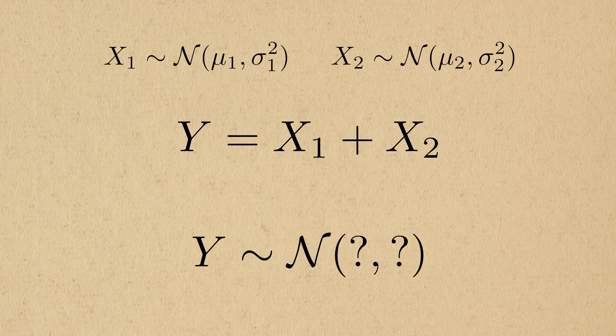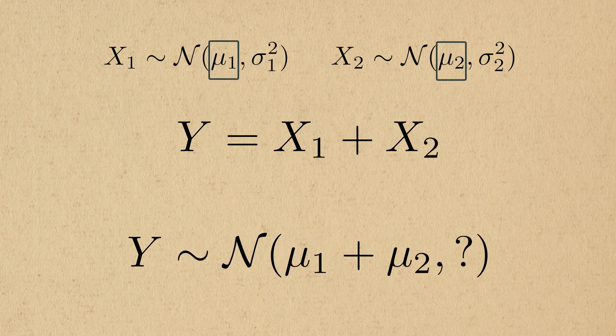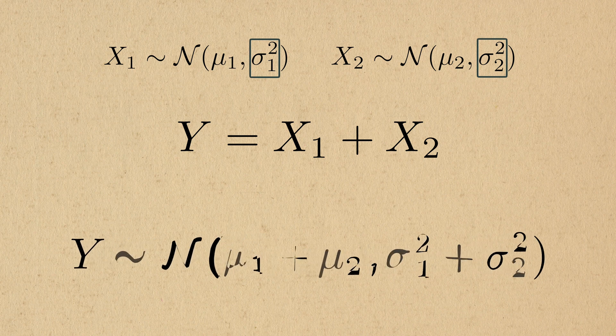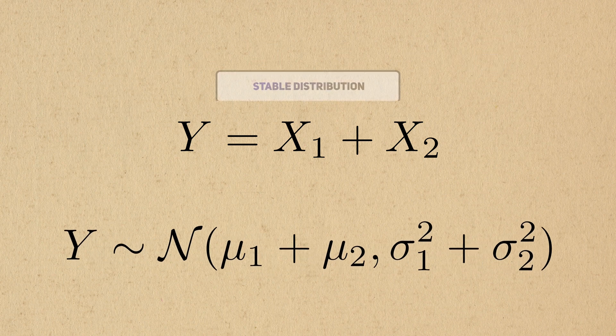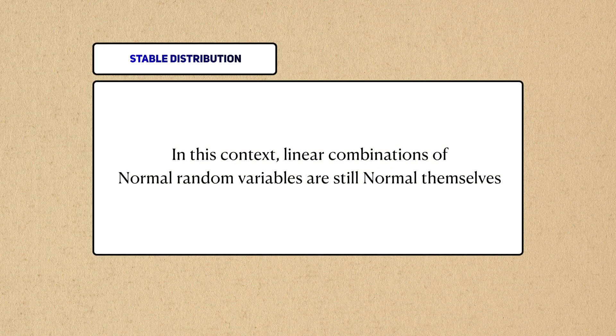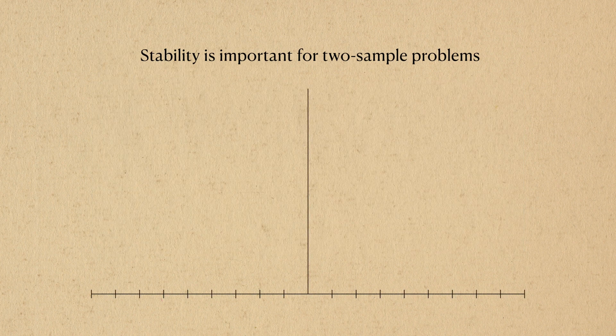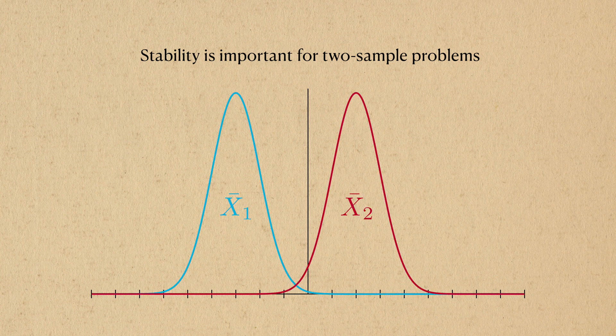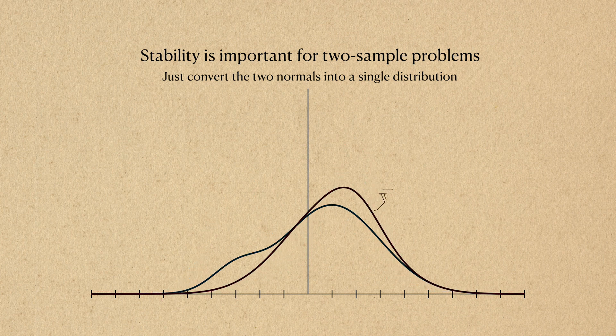To get the new mean of the sum, we just need to add the means of the ingredient normals. To get the variance, it's the same thing. We just need to sum the variances. This property is referred to as stability. Linear combinations of normal random variables remain as normal. This comes up again when we consider two sample t-tests. Rather than deal with two different normal distributions, we can just subtract one from the other and turn it into a single normal.